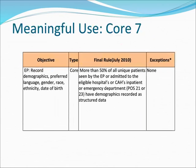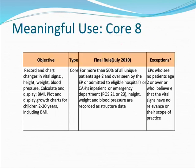Meaningful Use Core 7, Final Rule: More than 50% of all unique patients seen by the EP who are admitted to eligible hospitals or CAHs in patient or emergency department (POS 21 or 23) must have demographics recorded as structured data. Exception: None.